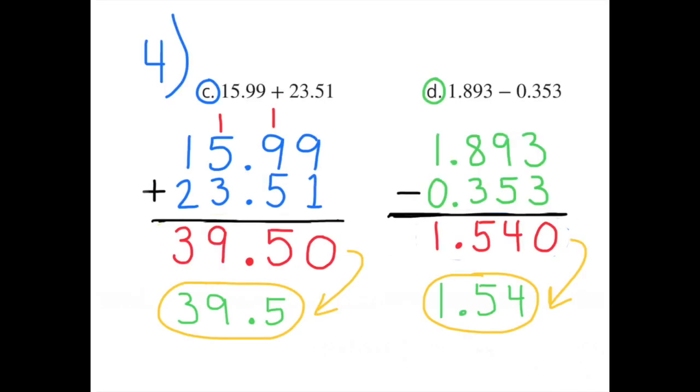Part c: 15 and 99 hundredths plus 23 and 51 hundredths. That equals 39 and 5 tenths. Part d: 1 and 893 thousandths minus 353 thousandths. That equals 1 and 540 thousandths, or 1 and 54 hundredths.